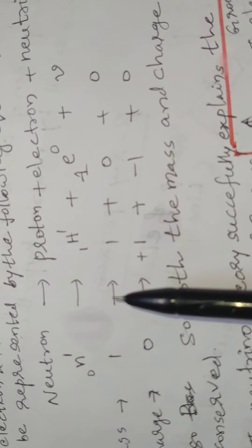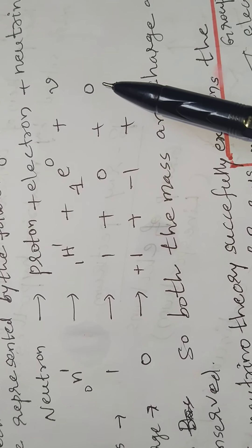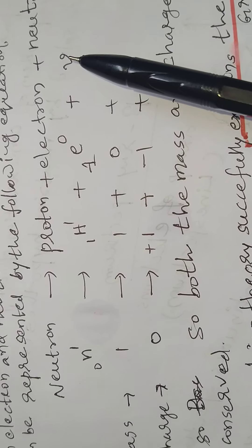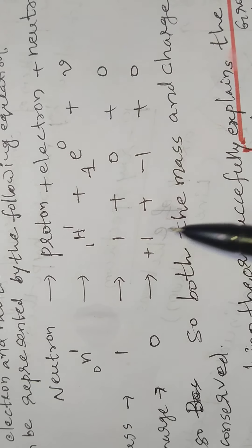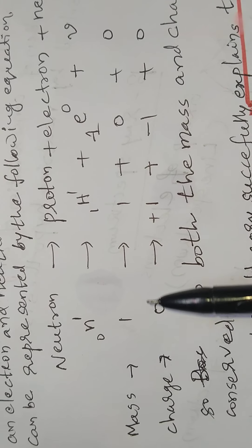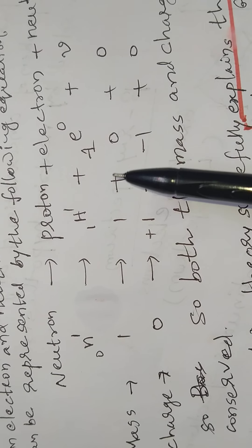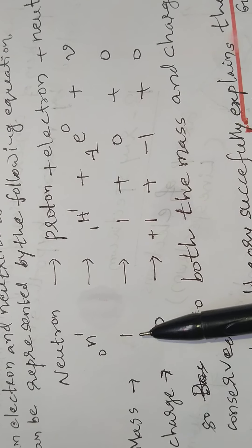Here, considering mass numbers: the neutron has mass number one, the proton has mass number one, the electron mass is negligible (zero), and the Neutrino mass is also zero. So one equals one plus zero plus zero, which equals one. Therefore, mass is conserved.